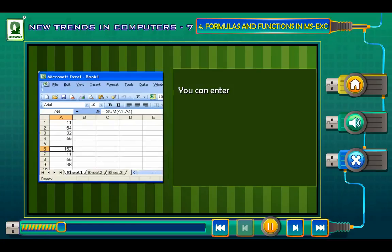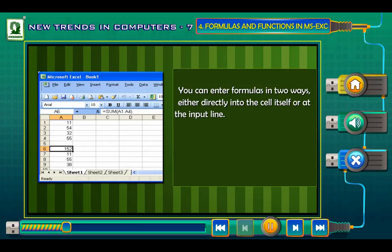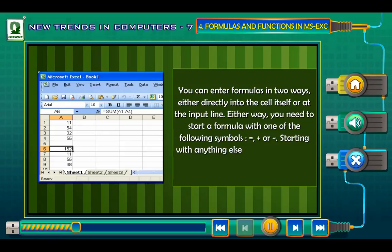You can enter formulas in two ways: either directly into the cell itself or at the input line. Either way, you need to start a formula with one of the following symbols: equals, plus, minus, or comma. Starting with anything else causes the formula to be treated as if it were text.